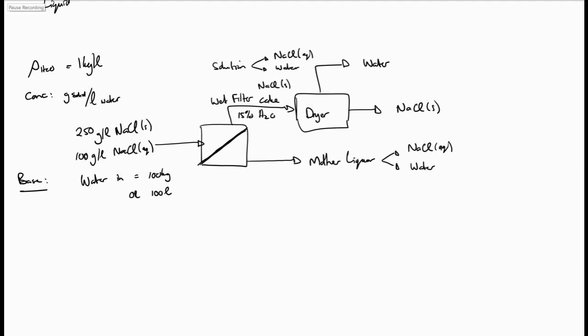First, we can calculate the amount of sodium chloride solids coming into the system and leaving in the filter cake. With 250 grams per liter of sodium chloride solids coming in and 100 liters of water being fed, that equals 25 kilograms of sodium chloride solids.